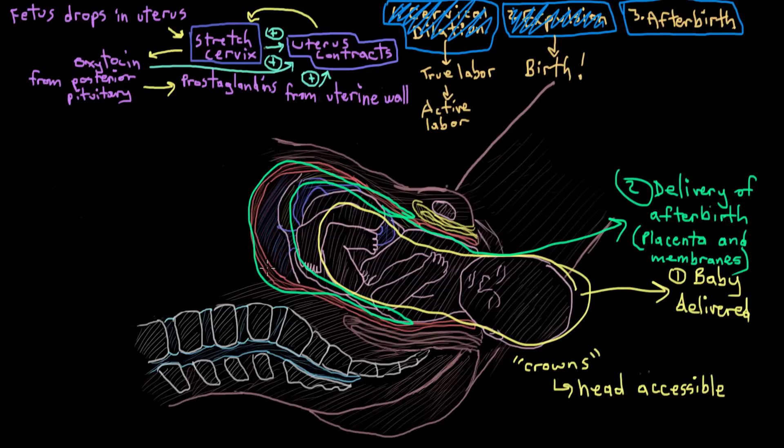The uterus actually continues to contract after this happens though, and that helps the uterus to return to its pre-gestation size. And this process of uterine shrinkage is called involution. This involution also allows mom's other abdominal organs to return to their normal locations after pregnancy.